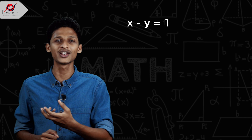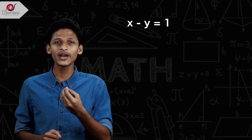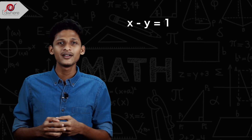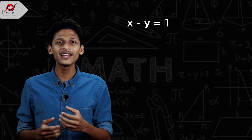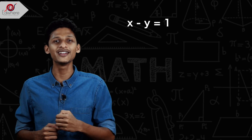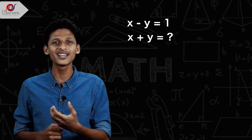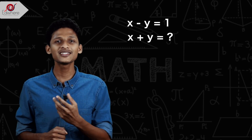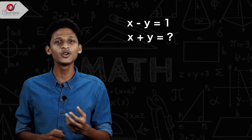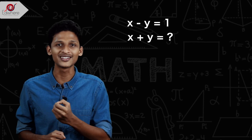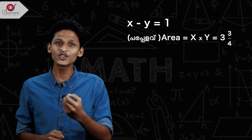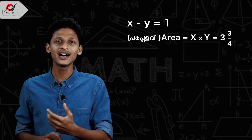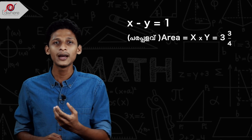Hello Friends! x minus y is equal to 1. Now we are getting x minus y. We can solve this problem. We don't have to solve this problem a complicated way — we can solve the problem with x minus y. We'll find the value of x minus y. That's why we solve the problem.